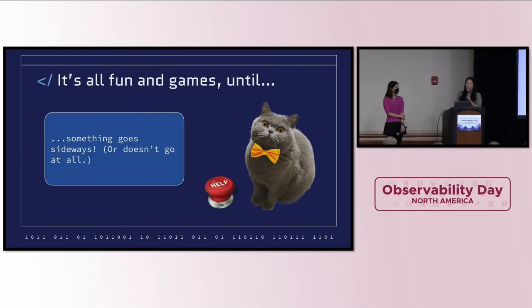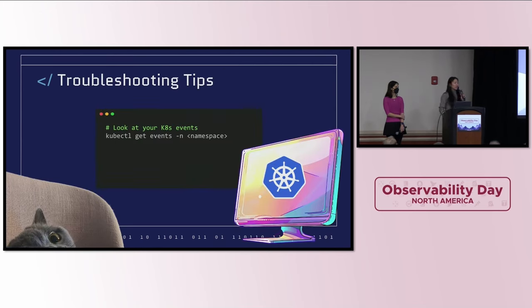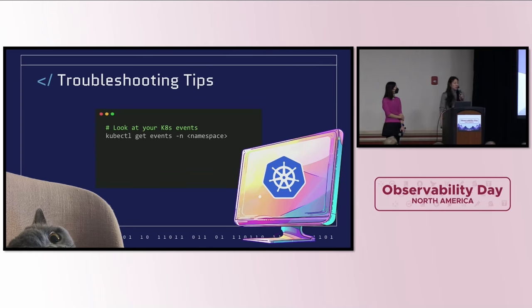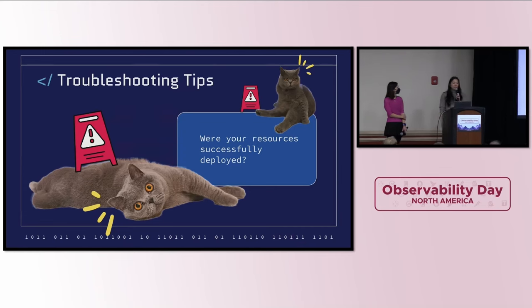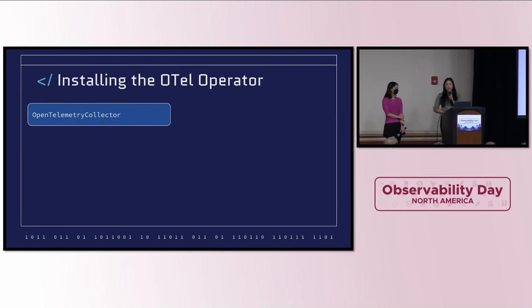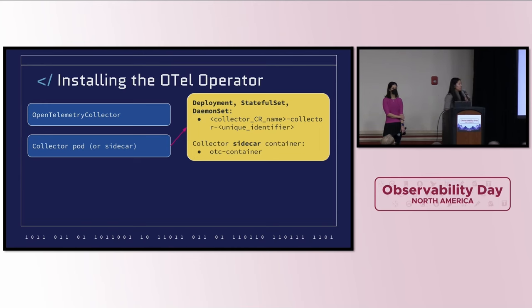So what happens when you've deployed the OpenTelemetry Collector CR and things go sideways or you're not seeing any data? Kubernetes events provide detailed and chronological information about what's happening with various components of your cluster. To view events for a specific namespace, use that command and replace namespace with your namespace. Also check whether your resources were successfully deployed. When an OpenTelemetry Collector resource is deployed, the following objects are created: the OpenTelemetry Collector, the collector pod if you specify non-sidecar mode, and a deployment, stateful set, or daemon set resource.